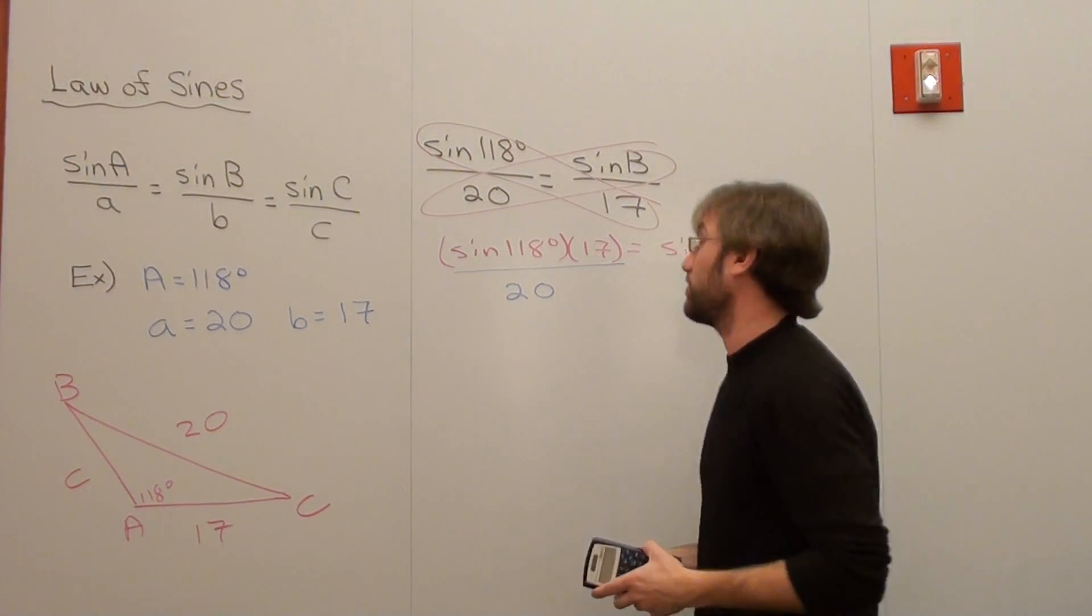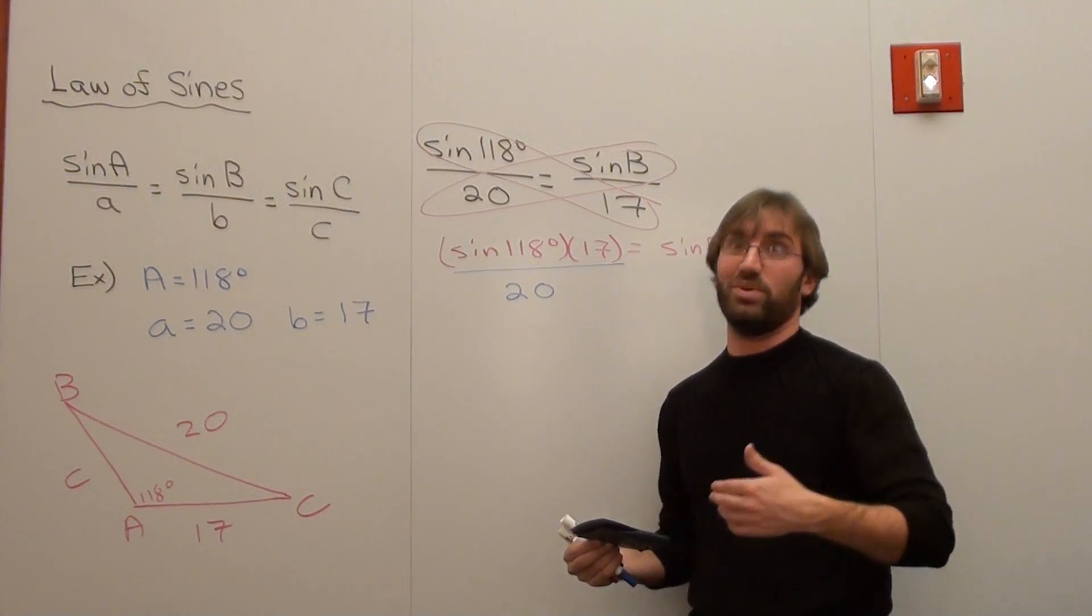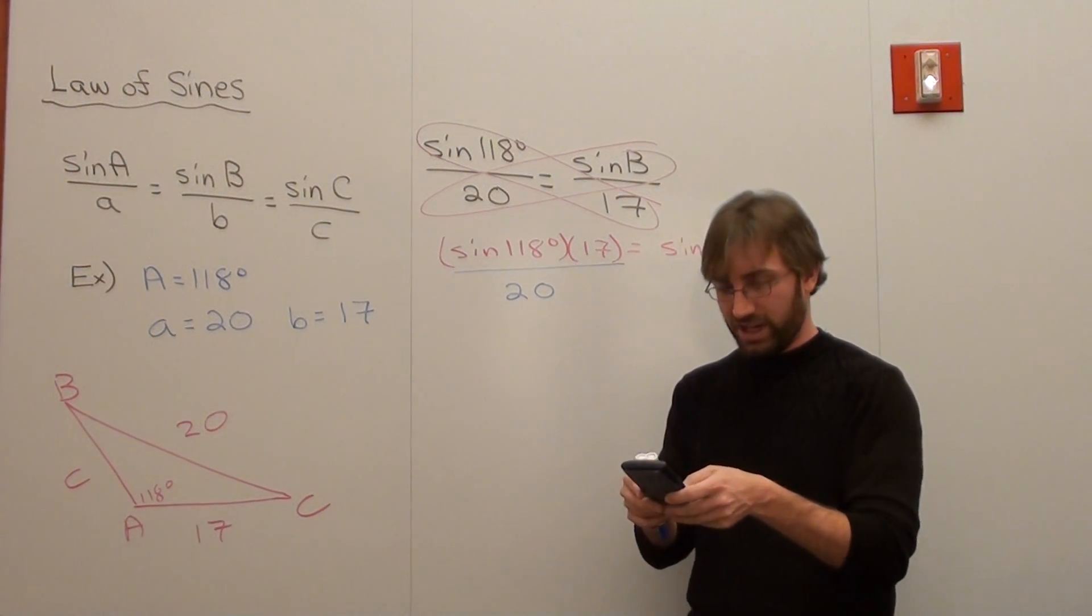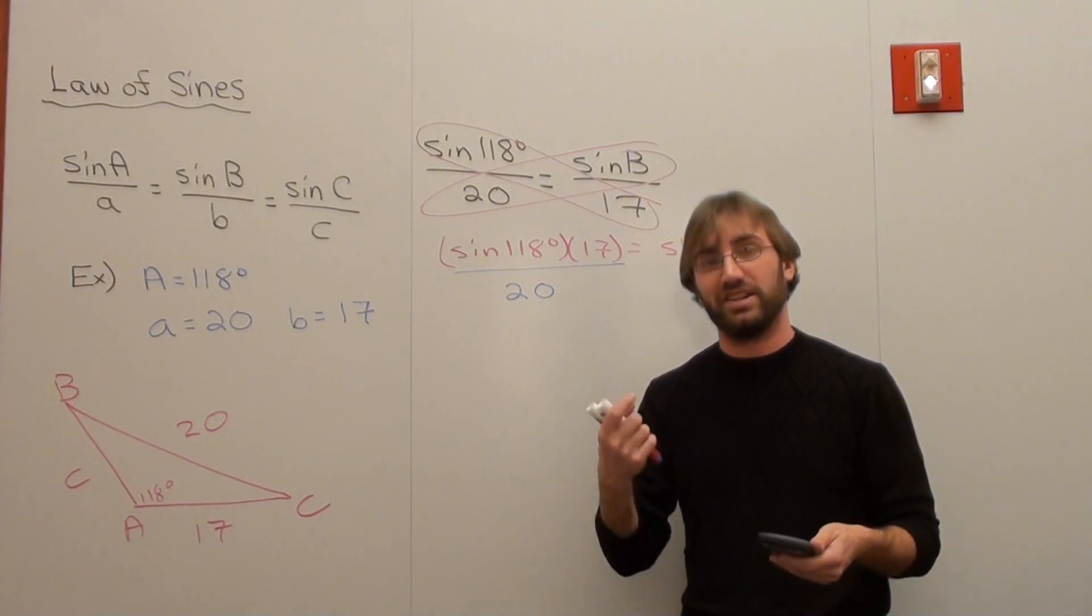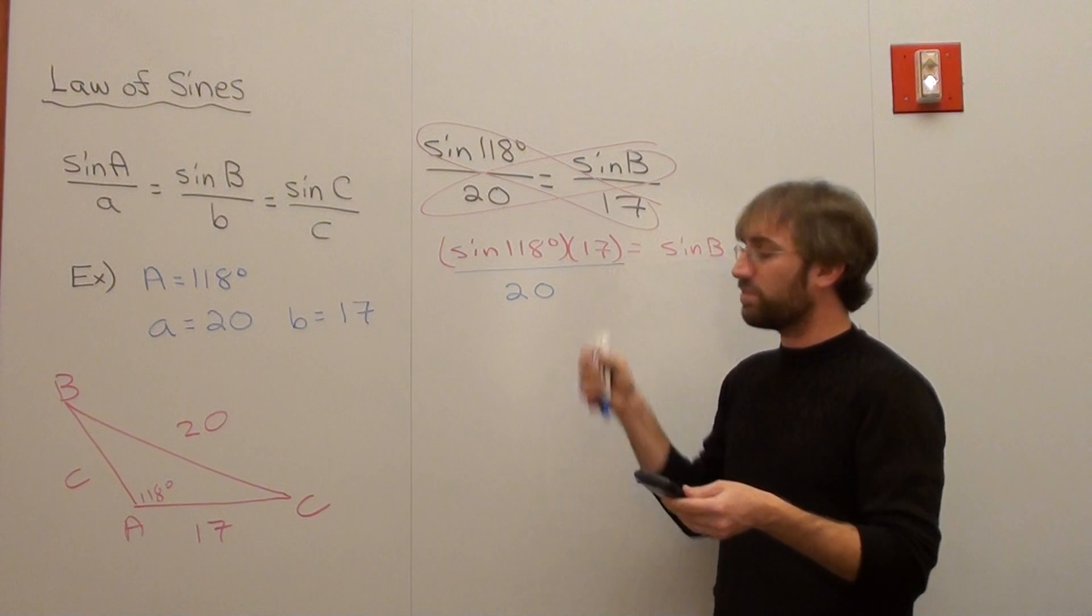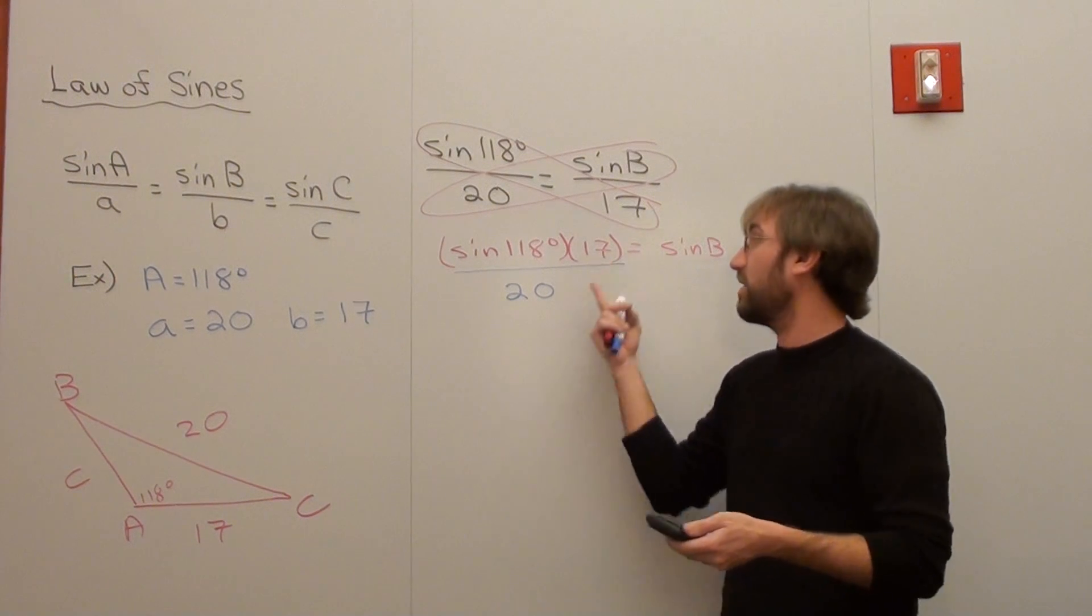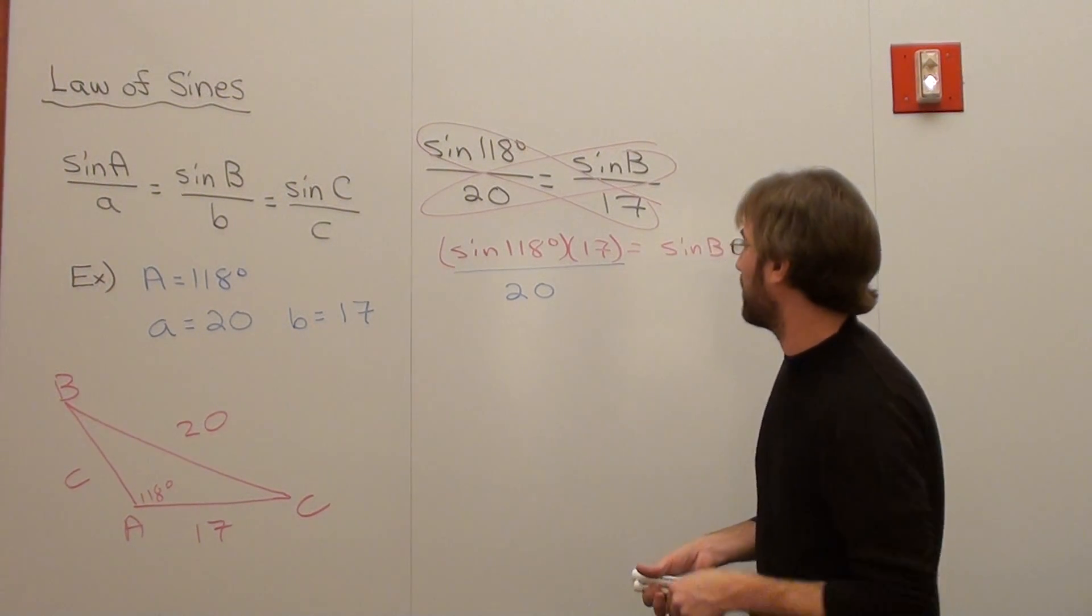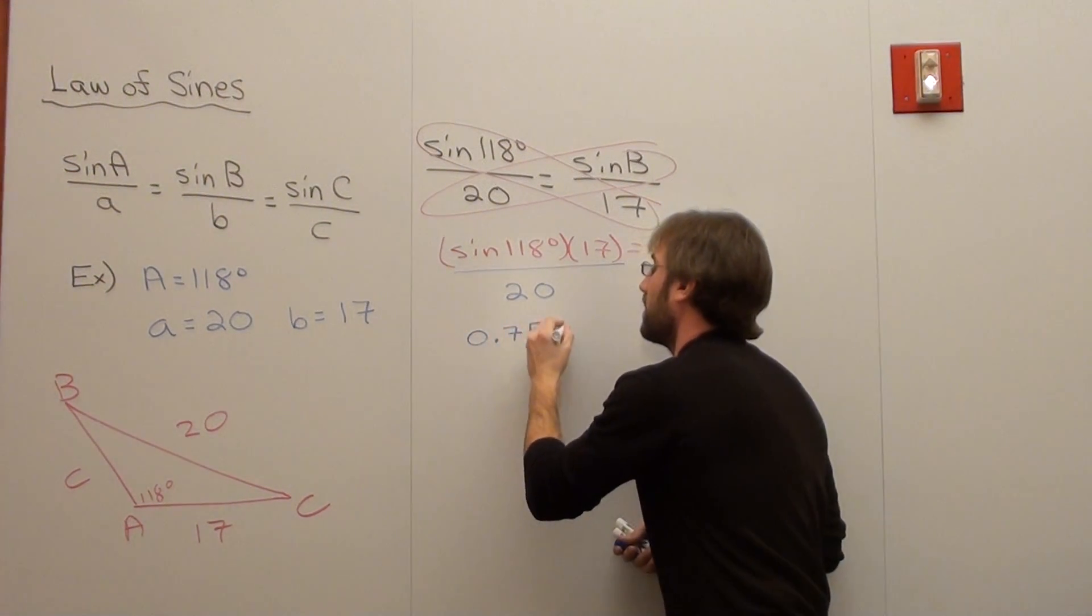When I do that, and for shame, I can't actually do that in my head. I know that the sine of 118 is positive and it's going to be more than .866, but other than that, I really don't know. This is where I say to myself, get out your calculator. That's actually like .882 something, and I've got to multiply by 17. That comes out to 15, and then I divide by 20 at the end, and I get .75. And that's how I'm going to leave it. .75 equals sine of B.